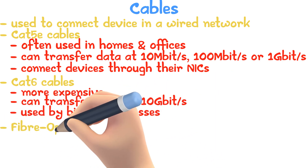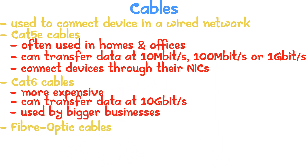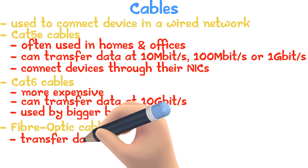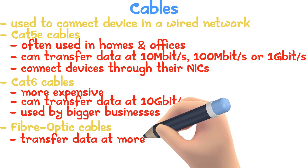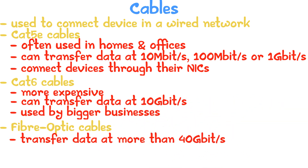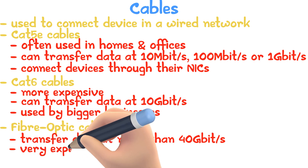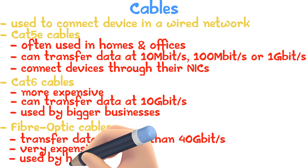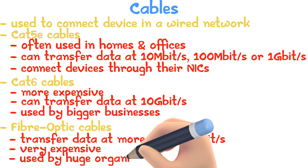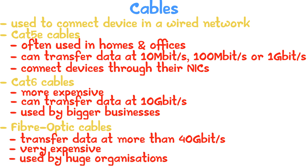Fiber optic cables contain a glass thread that bounces light signals between devices faster. They can transfer data at more than 40 gigabytes per second, which makes them very expensive, and so they are only used by huge organizations who need fast data transfer, like a laboratory.